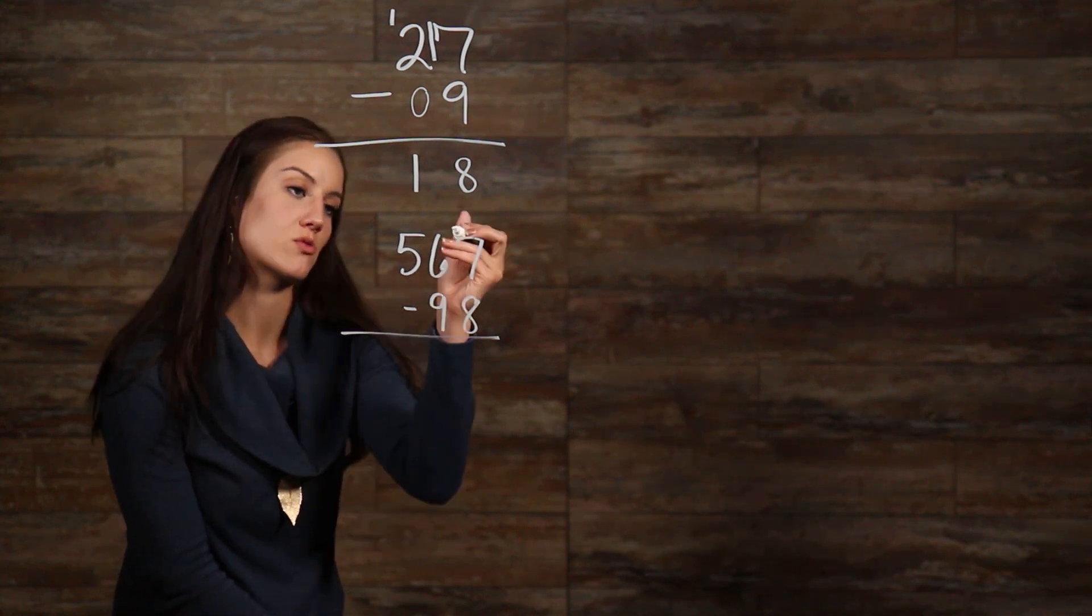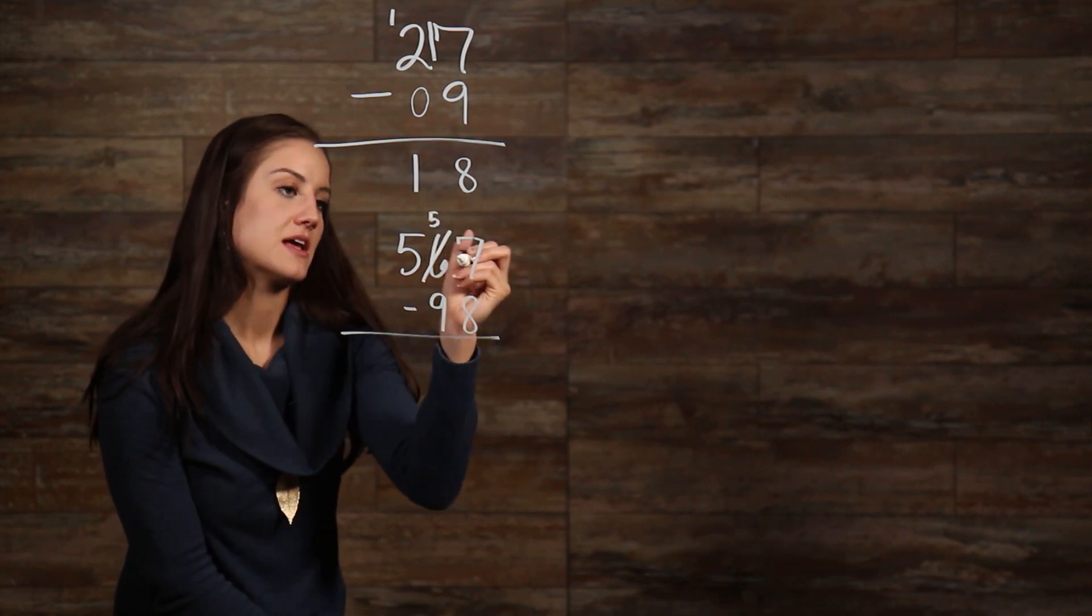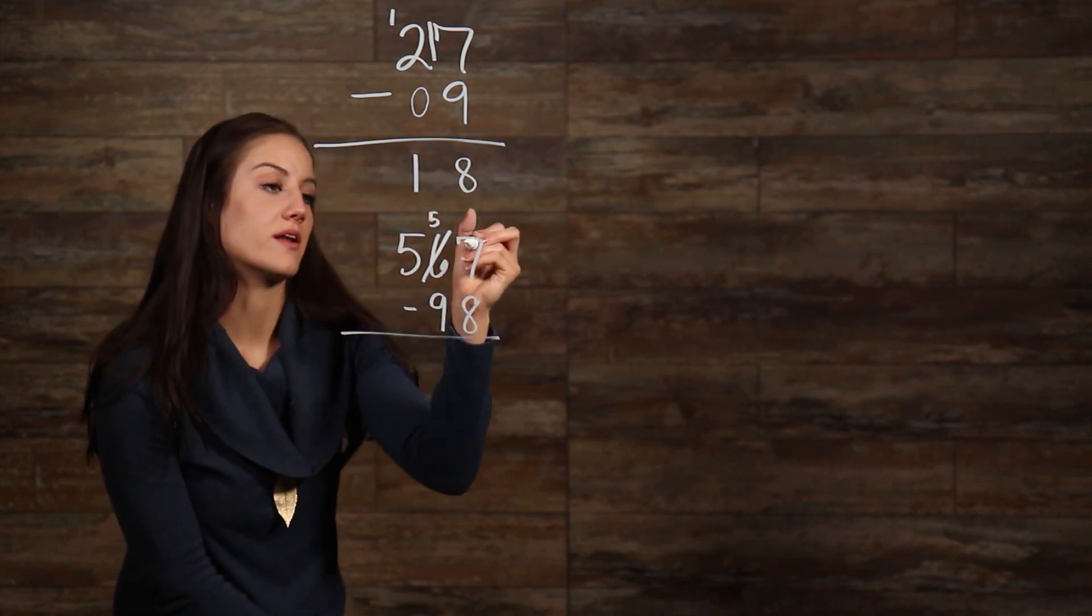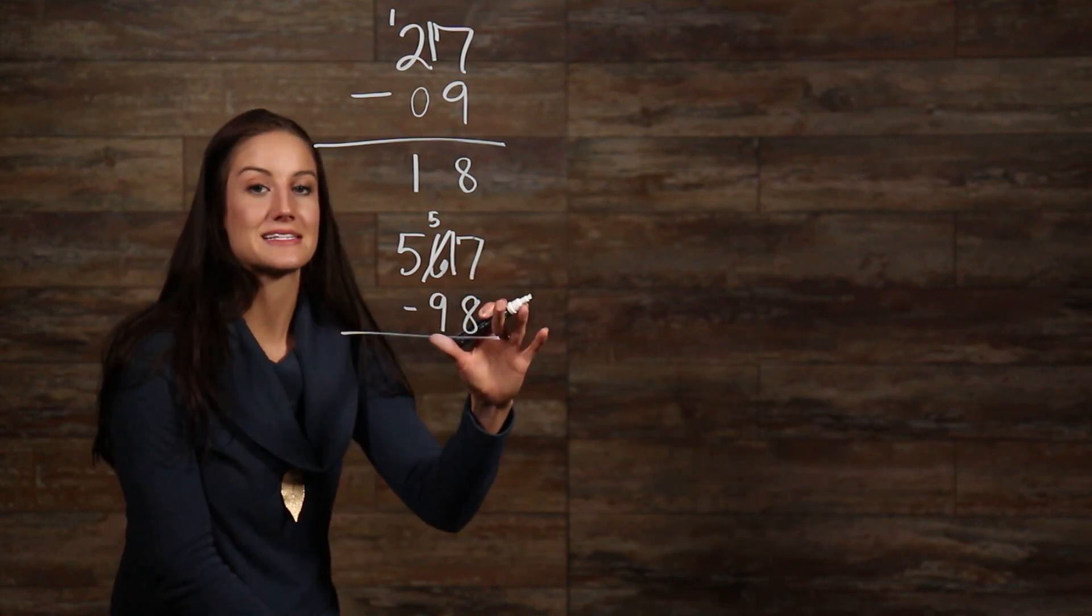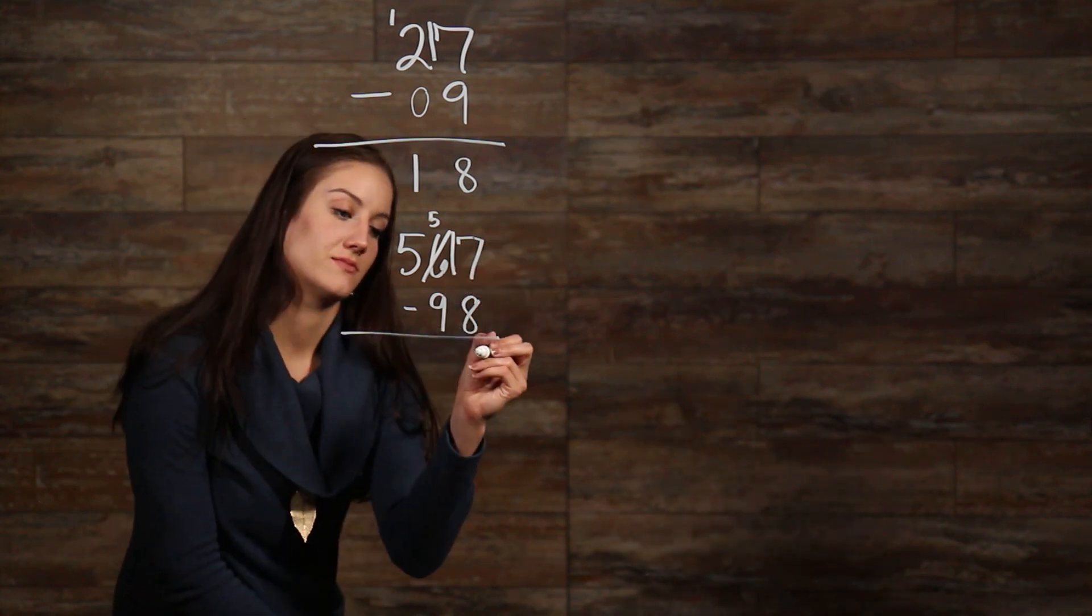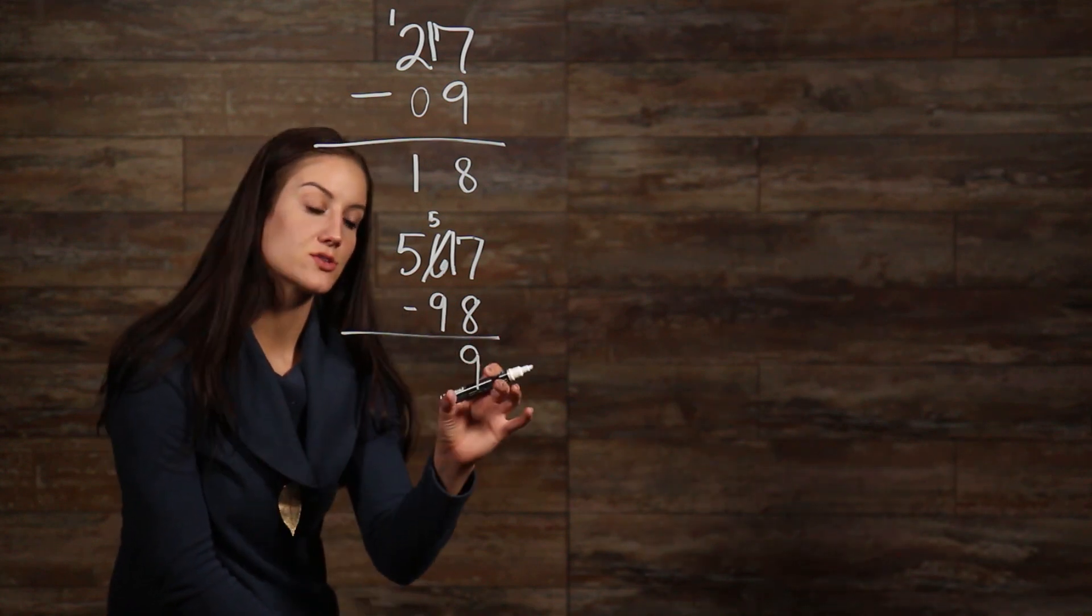So, we cross out the 6, and that gives us 5 left over, and we're going to bring down that 1 in front of our 7. Now, we have 17 minus 8, which is 9. So, again, keeping our number places aligned, we bring that down to our ones place.